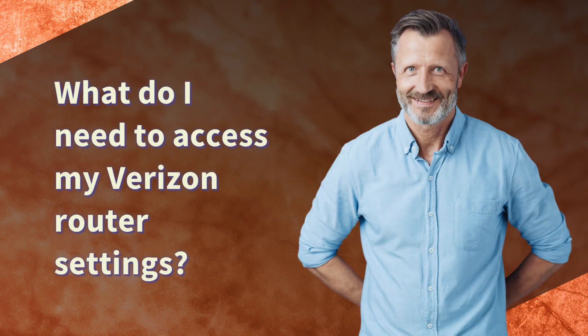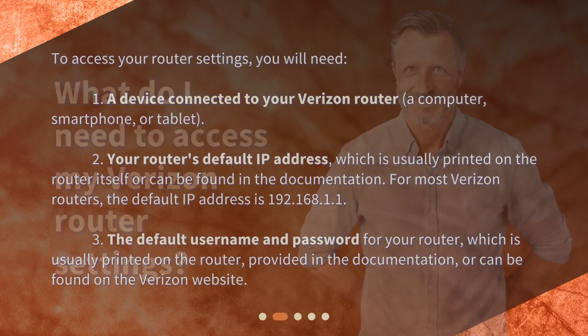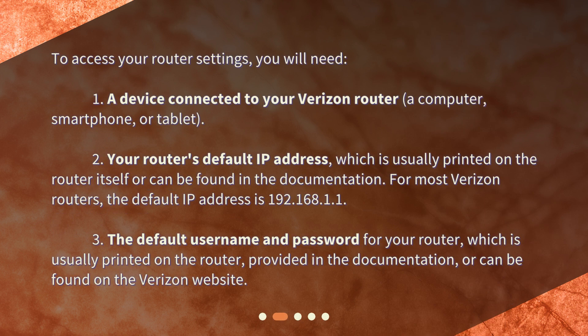What do I need to access my Verizon router settings? To access your router settings, you will need: 1. A device connected to your Verizon router — a computer, smartphone, or tablet. 2. Your router's default IP address, which is usually printed on the router itself or found in the documentation. For most Verizon routers, the default IP address is 192.168.1.1. 3. The default username and password for your router, which is usually printed on the router, provided in the documentation, or found on the Verizon website.